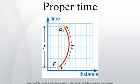An accelerated clock will measure a smaller elapsed time between two events than that measured by a non-accelerated clock between the same two events.